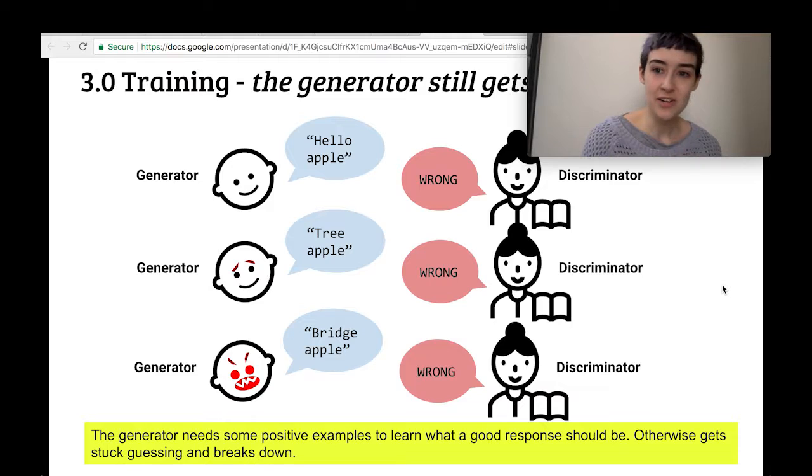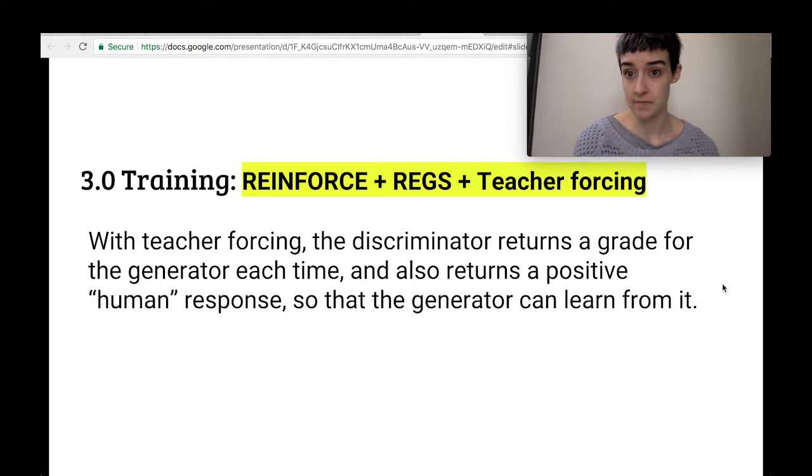All right, so the generator also gets kind of frustrated and isn't able to learn this way. So what the authors introduce is teacher forcing. So this algorithm now has REINFORCE, REGS, and teacher forcing. Teacher forcing means that the teacher, the discriminator, is going to return a human response as well as the grade for what the generator said. So this is pretty much like on a test, you see what the right answer is even though you got it wrong. You can see the right answer so you can learn from it and not just learn from what you did incorrectly without any information of why.